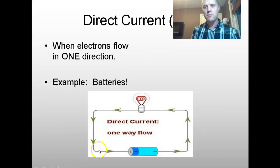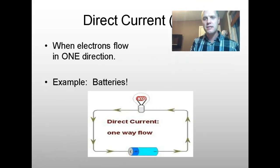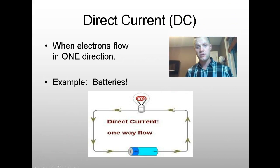Two types. The first type is DC. DC is direct current where electrons flow in one direction. It has a constant current, always going in one direction from the negative end to the positive end of the battery.